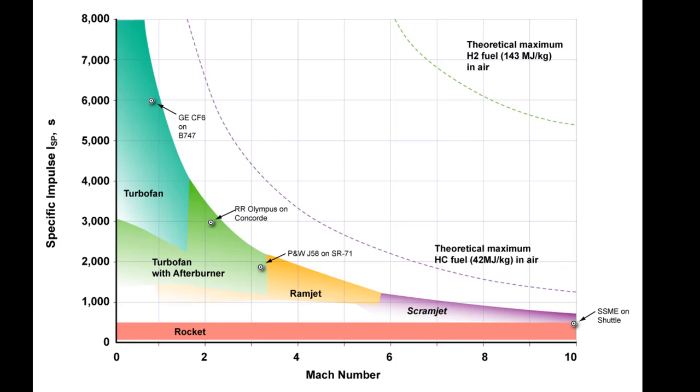So let's go to some pictures and maybe some examples. Here's a really nifty plot I found on Wikipedia. This is the Wikipedia article on specific impulse. Across the horizontal axis is Mach number, and on the vertical axis is specific impulse.